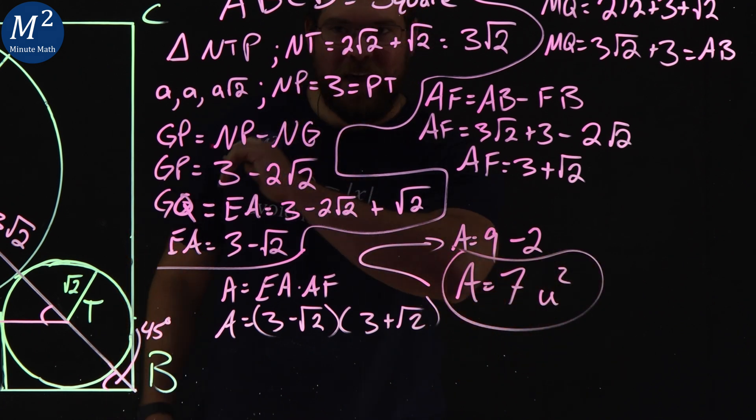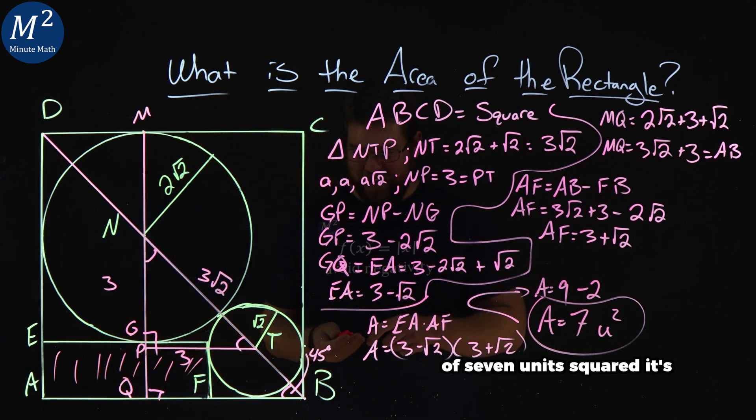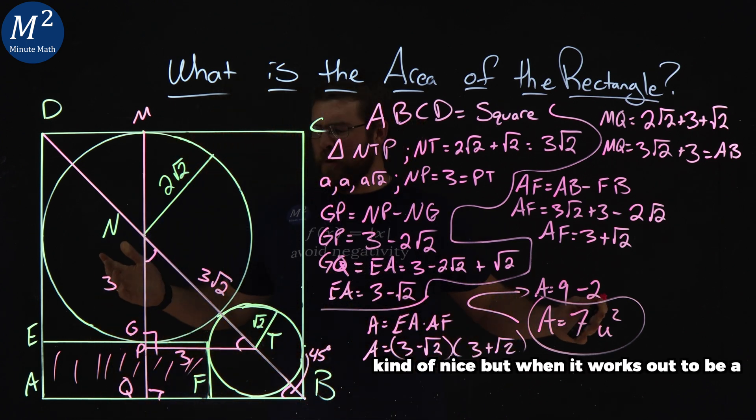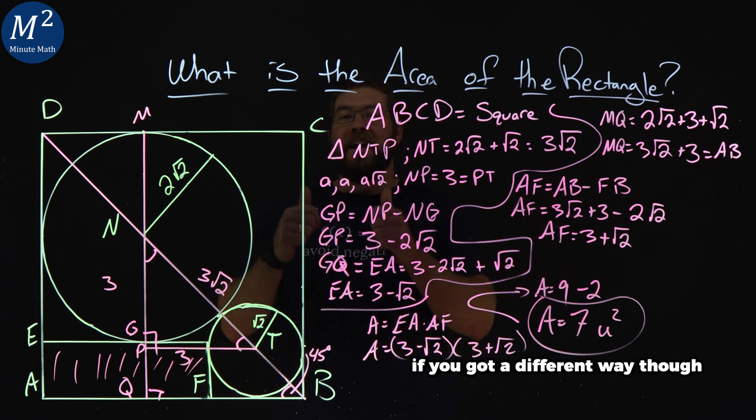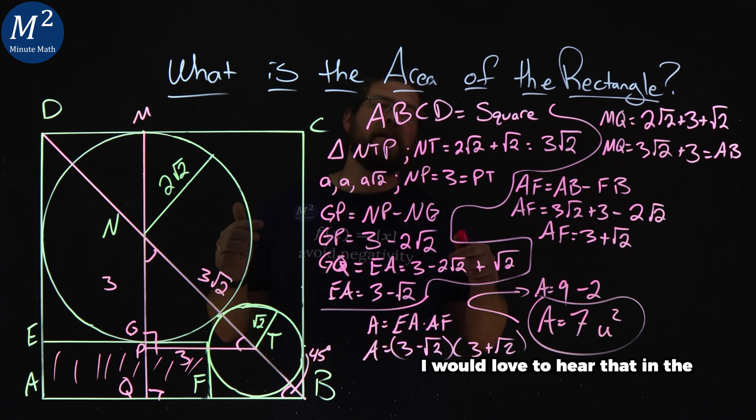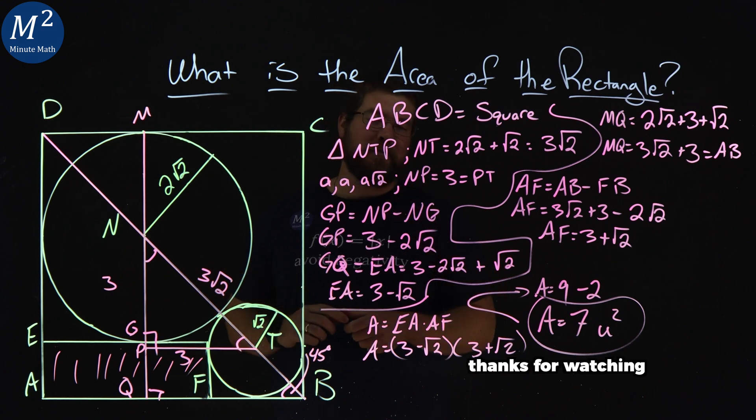So after all of that, our little lovely rectangle right here has an area of 7 units squared. It's kind of nice when it works out to be a nice integer value. Is that the answer you got? If so, great. If you got it a different way though, I would love to hear that in the comment section below. As always here, thanks for watching.